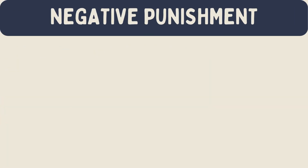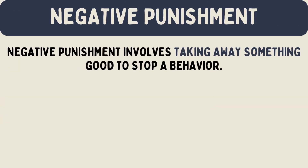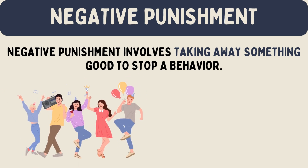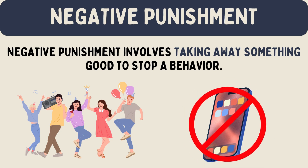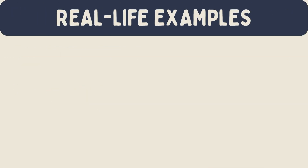Negative punishment involves taking away something good to stop a behavior. For example, if you stay out too late and your parents take away your phone, you are less likely to stay out late again. Losing your phone is a negative punishment.